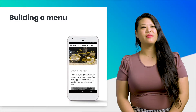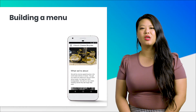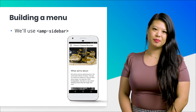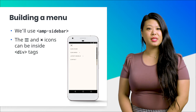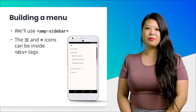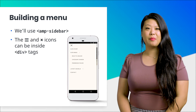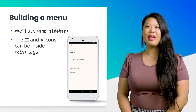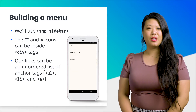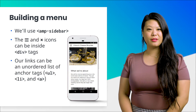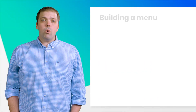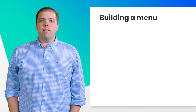Looking at the list of AMP components, we decide to make the menu with the AMP sidebar component. We'll use div tags to implement the horizontal bars icon — sometimes also called a hamburger icon — and the X icon. We'll implement the links as an unordered list of anchor tags, which is a standard web solution.